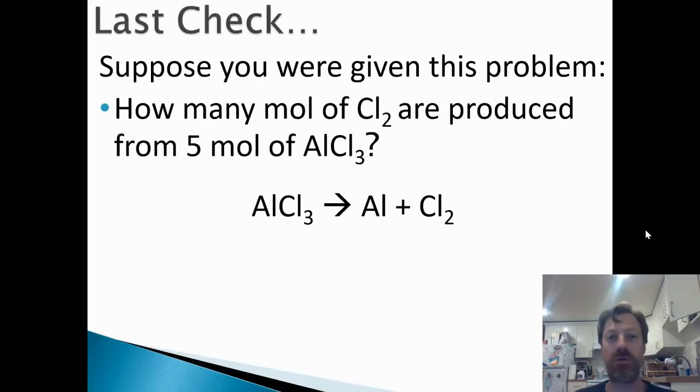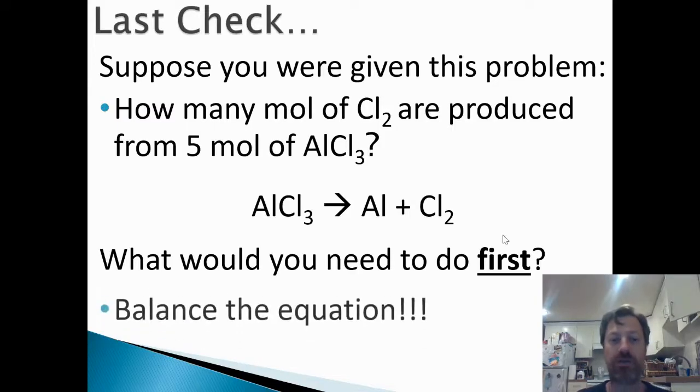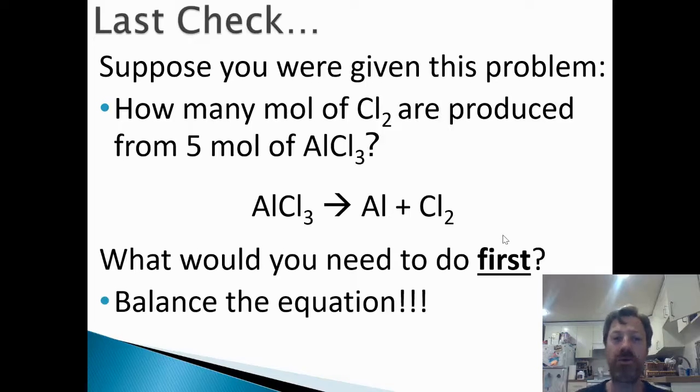Last thing before we do some practice problems. Suppose we're given this problem here. How many moles of Cl2 are produced from 5 moles of AlCl3? And we're given the equation from which we can solve this problem. So what do you need to do first before you solve this? Well, one thing that you may notice is that we do not have a balanced equation. We've got three chlorines in the AlCl3 in the reactant side, but only two chlorines on the product side of the equation. So this problem isn't balanced. This would essentially be saying three atoms of chlorine produce two atoms of chlorine. That doesn't work. So in order to make sure that we get the right mole-to-mole ratio, we have to balance our equation first. So make sure you double-check that your equations are balanced before you figure out mole-to-mole ratios.